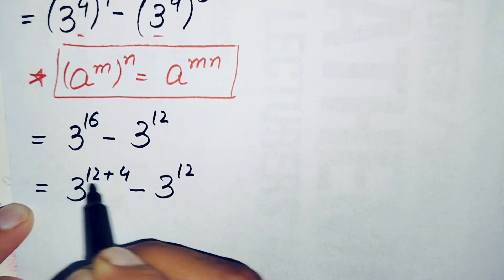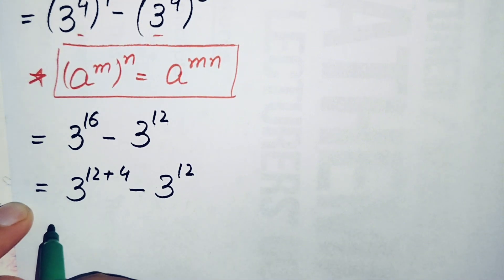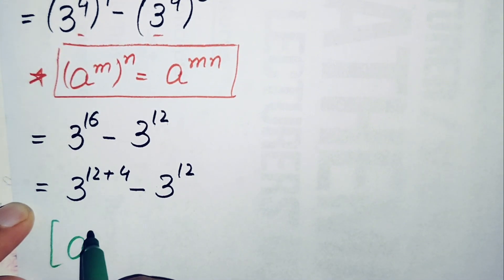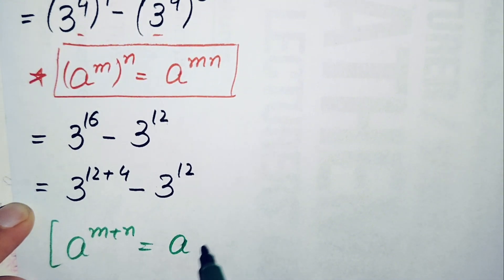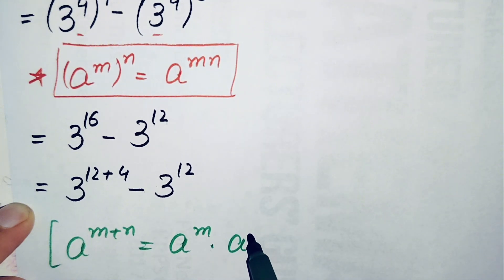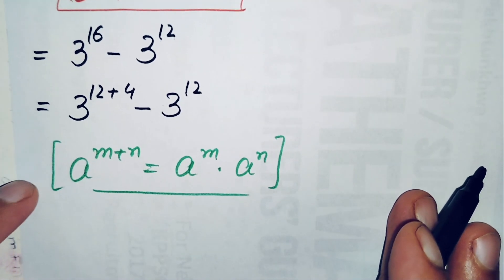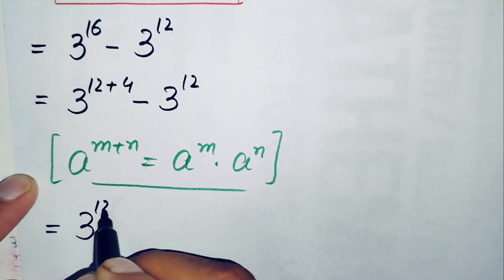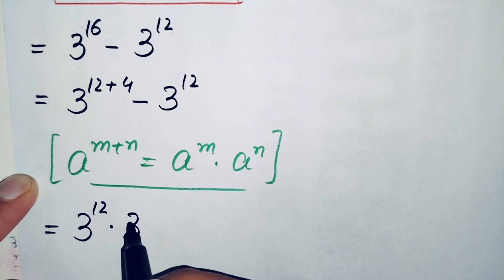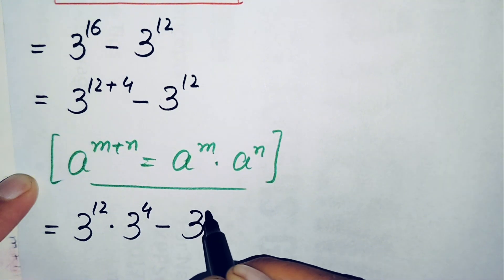In the first term we apply another exponential property: a raised to power m plus n equals a raised to power m times a raised to power n. So 3 raised to power 12+4 becomes 3 raised to power 12 times 3 raised to power 4, and the equation becomes 3 raised to power 12 times 3 raised to power 4, minus 3 raised to power 12.